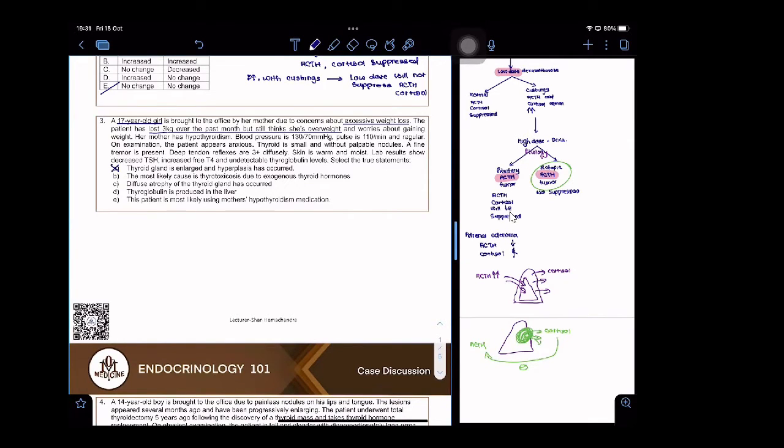What is this? Give me another disorder which is going to present with people worried about their weight and worries about gaining weight. Her mother has hypothyroidism. Blood pressure is elevated, pulse is high and regular. On examination the patient appears anxious, thyroid is small and without palpable nodules. Now forget psychiatric - what is the diagnosis? What is happening here?